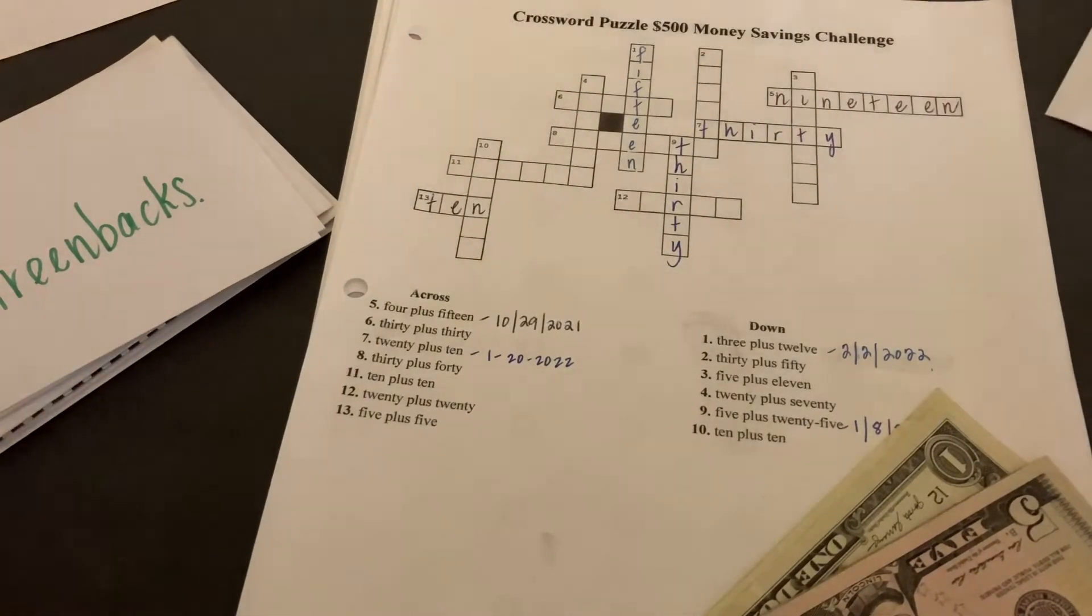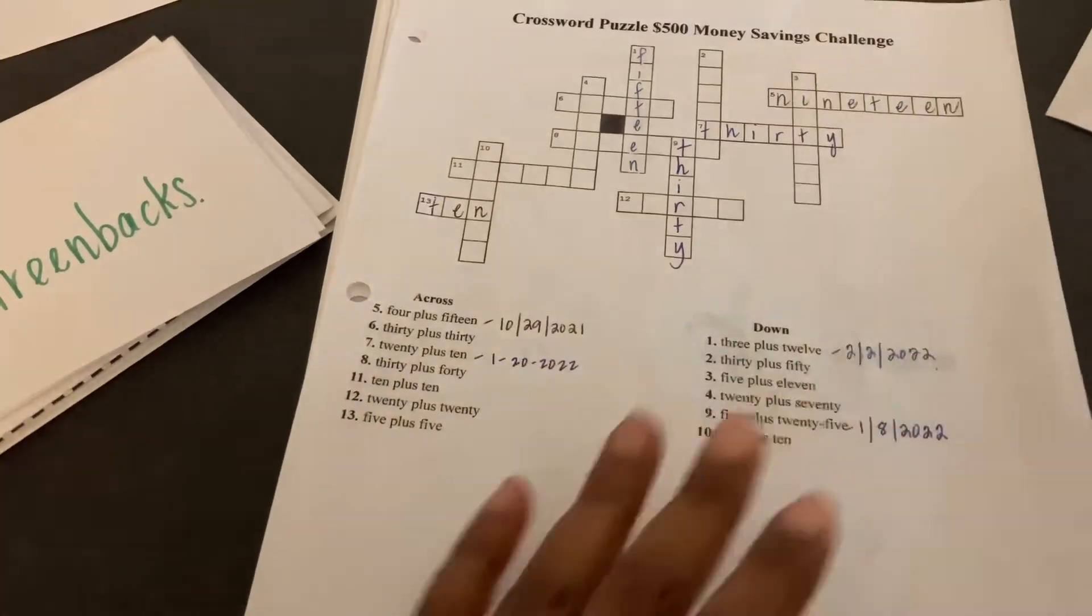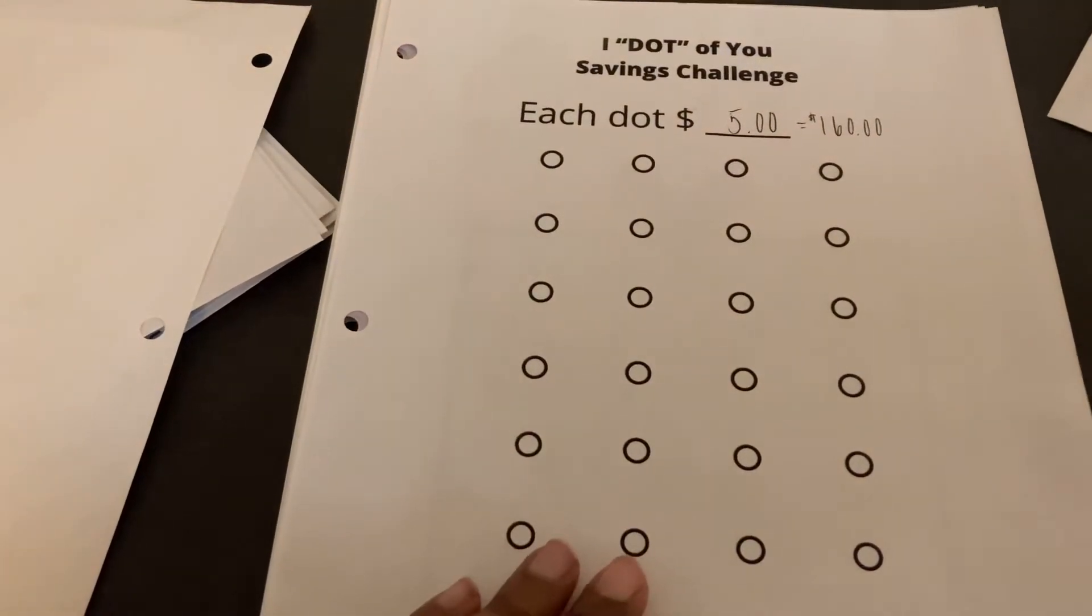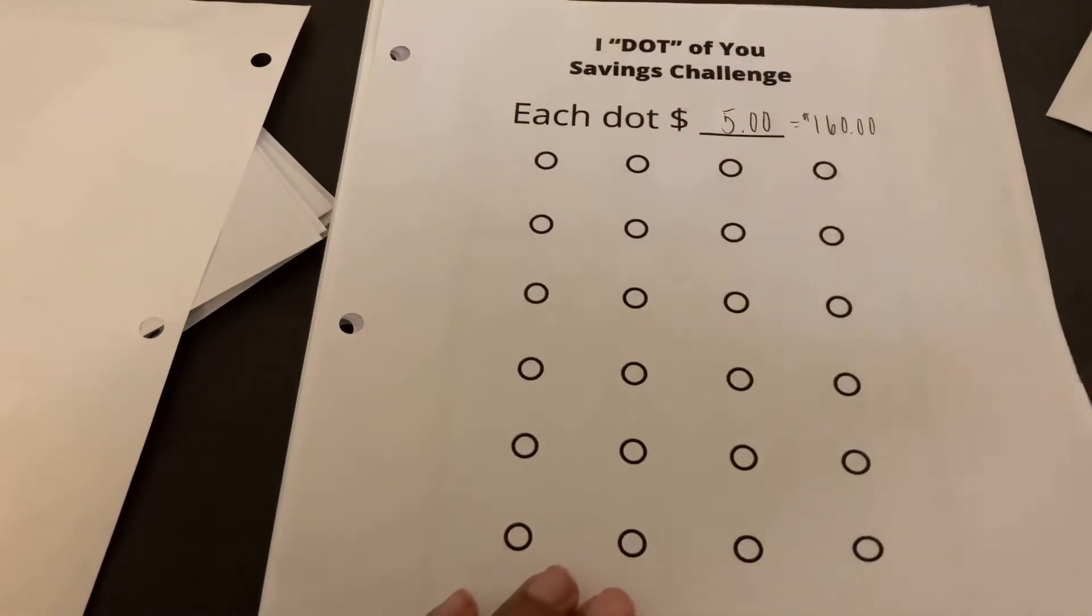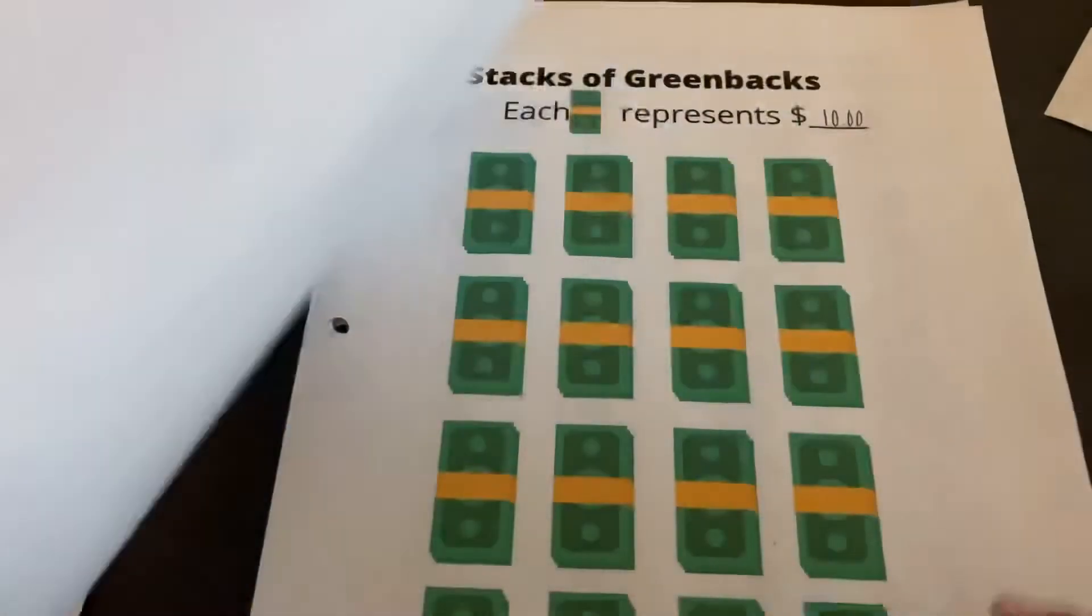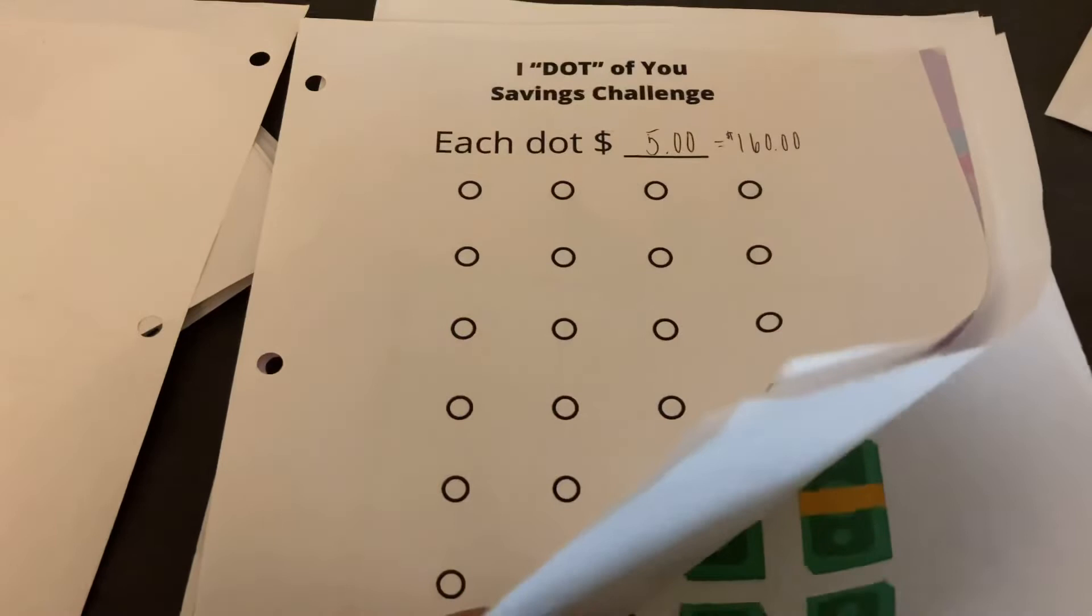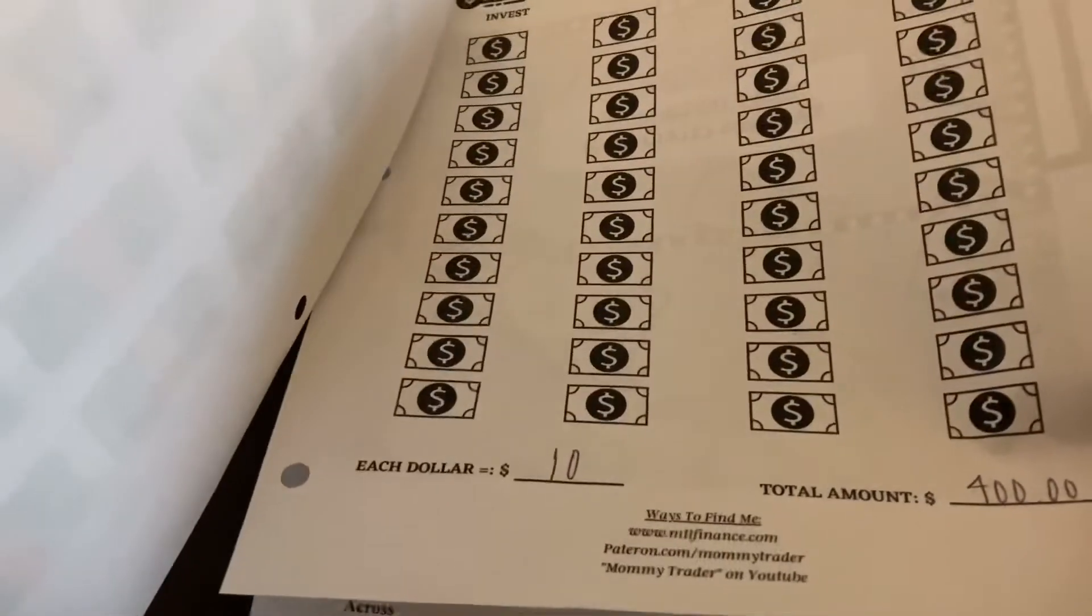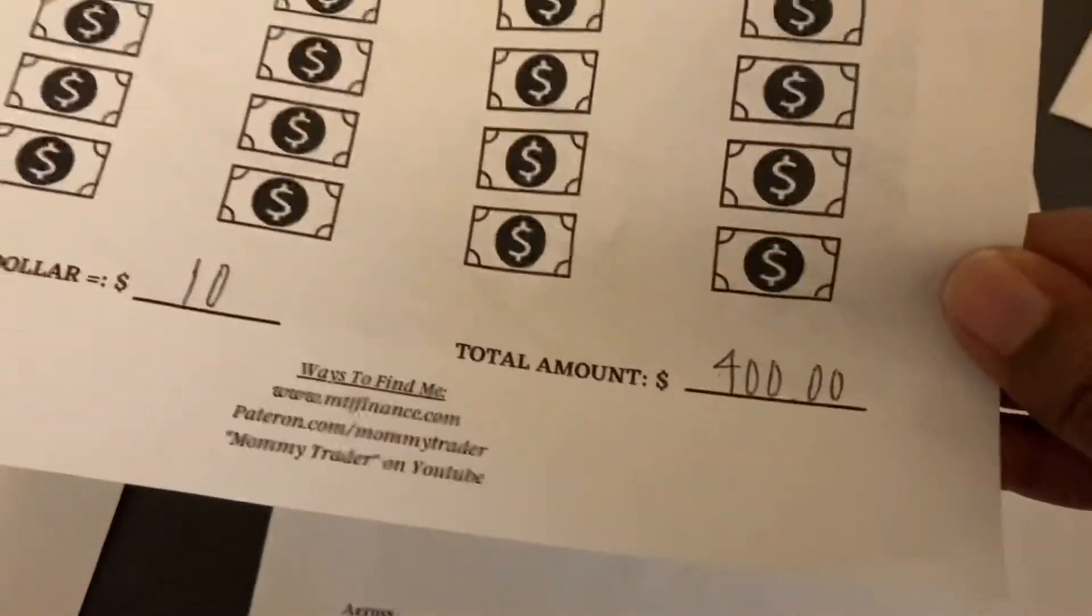So now I need to decide what other savings challenge I want to use. Let me go through them once again. So this is $10. Let's see, these are all $10. And this is a $10. I'm putting each dollar's worth $10, so this is going to add up to $400, and I'm not doing that.